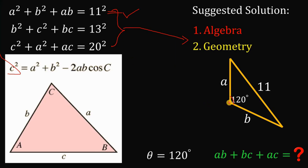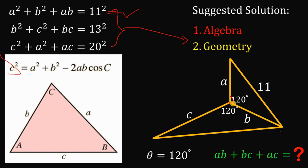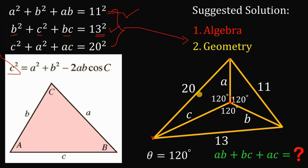Continuing from that point, let's add another segment C and connect the endpoints, again forming a 120-degree angle, with the opposite side equal to 13. Using the cosine law on this triangle gives the second equation: B squared plus C squared plus BC equals 13 squared. Then connecting the remaining points and calling that side 20, the cosine law on the third triangle gives C squared plus A squared plus AC equals 20 squared.